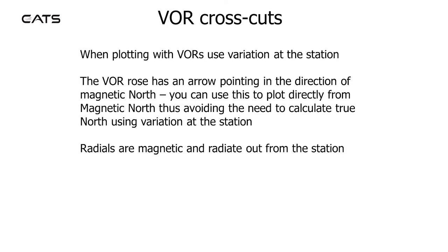VOR cross cuts. When plotting with VORs, use variation at the station. The VOR rose acts as an arrow pointing in the direction of magnetic north. You can use this to plot directly from magnetic north, thus avoiding the need to calculate true north using variation at the station. Radials are magnetic and radiate out from the station.